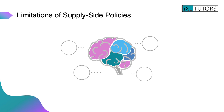Supply side policies obviously have their limitations, and there are four main ones. The first is that supply side policies have quite a long time lag — is the policy effective immediately? For example, with education, the benefits of education take up to 18 years to be felt. If you increased the age at which people have to stay in education, it takes up to 18 years for the workforce and the economy to feel the increase in productive potential.